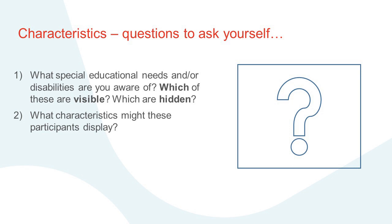We're going to start by looking at characteristics. Think about what special educational needs and/or disabilities you're already aware of, and start to consider which might be visible and which might be hidden. A visible characteristic might be that somebody comes onto poolside in a wheelchair. Something hidden might be that somebody gets into your lesson and it's only halfway through that you start getting clues about an additional need — perhaps through their behaviour or a lack of understanding of what you're saying.